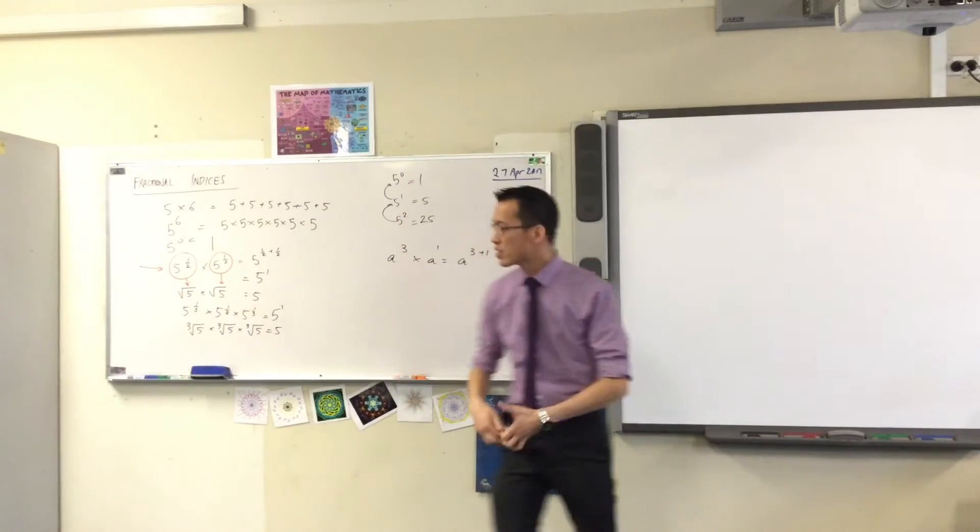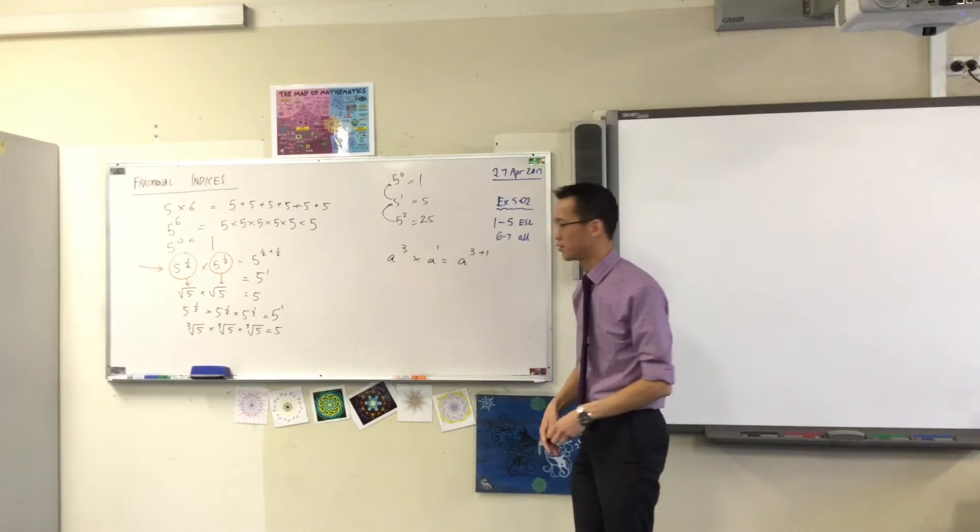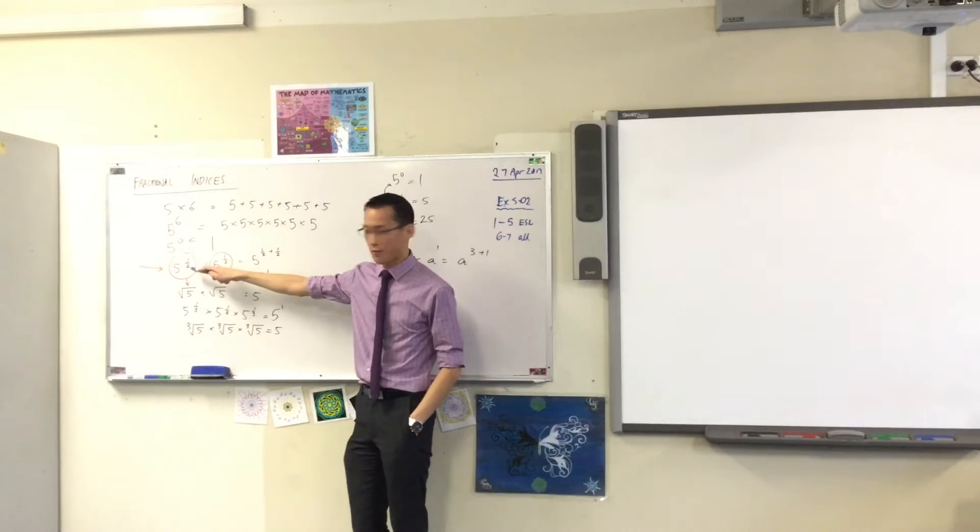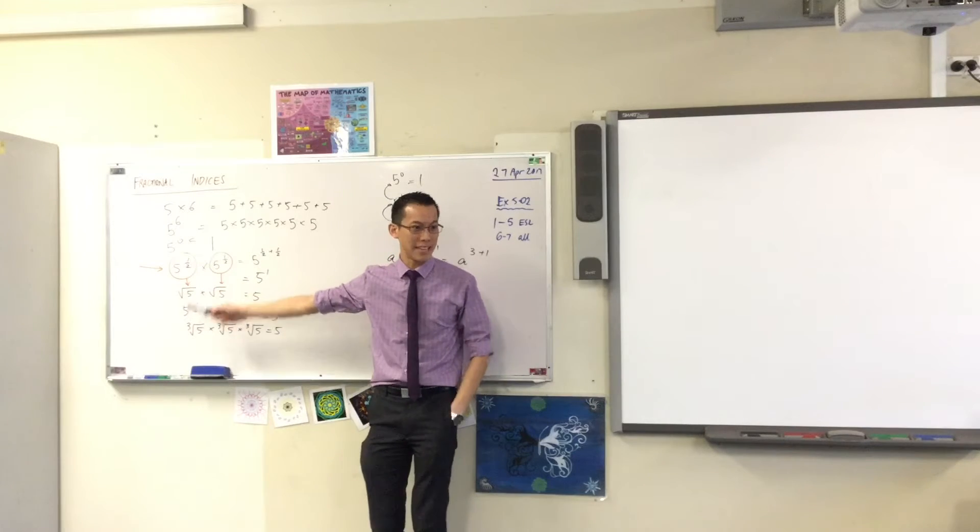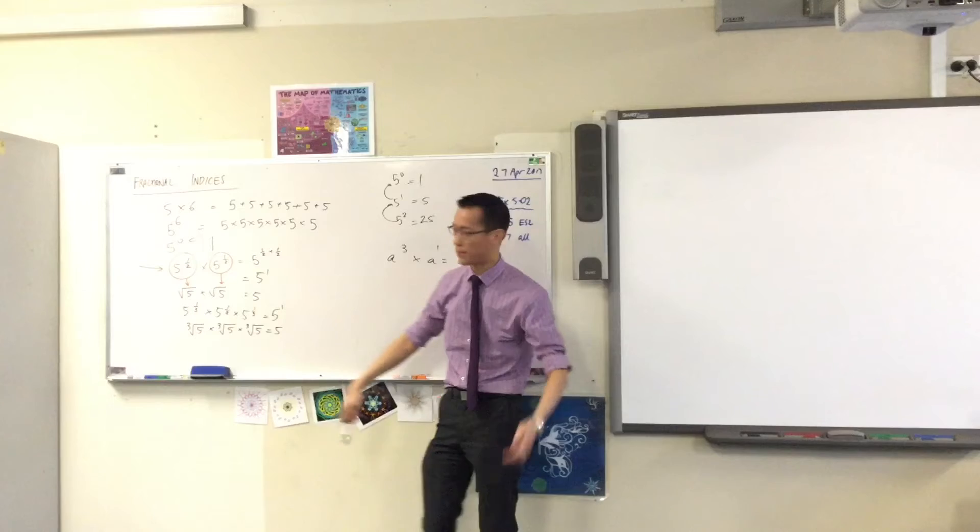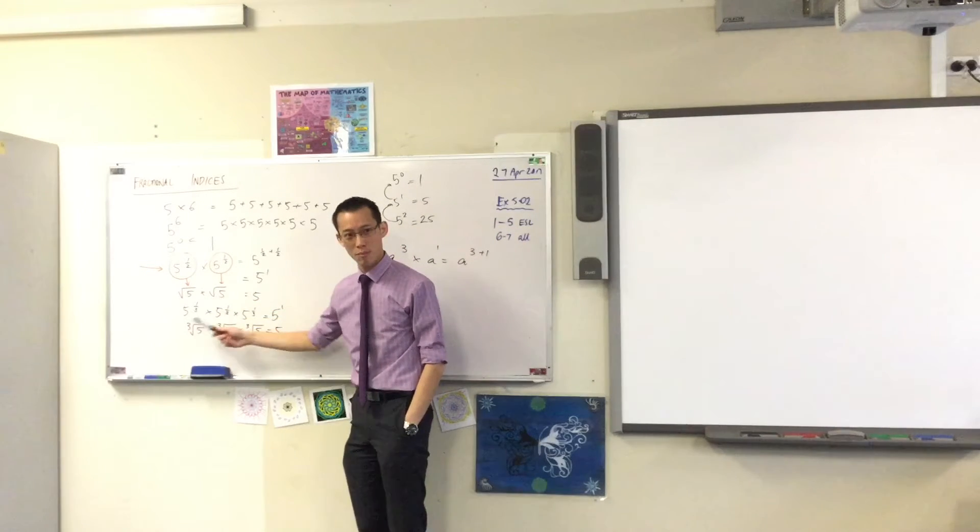So, here's what we can conclude from this and I can go through more examples if I want to. 5 to the power of a half, that's the square root of 5. That's my new definition, my new way of writing. It's part of why we did surds before. 5 to the power of a third is the cube root of 5.